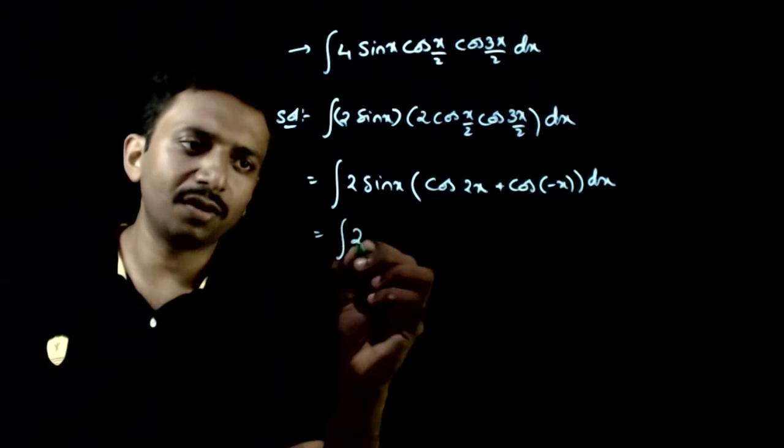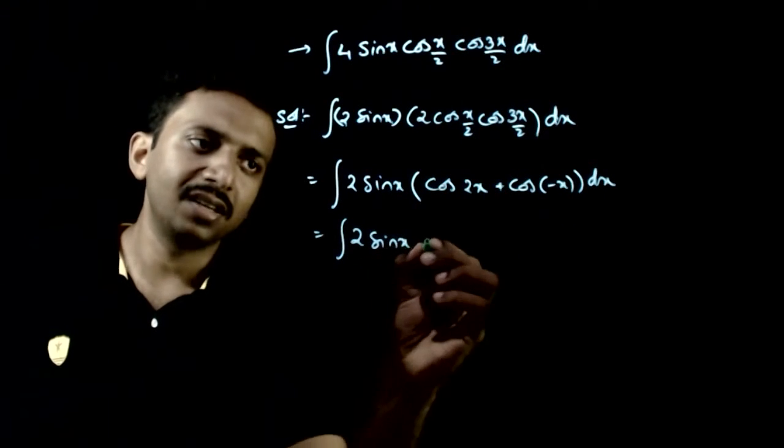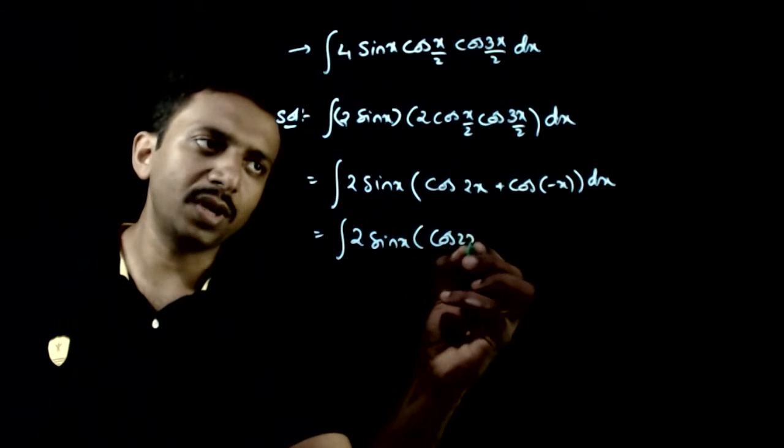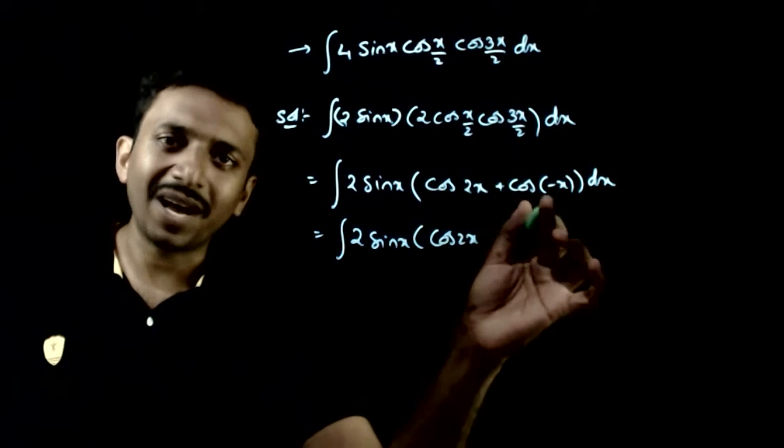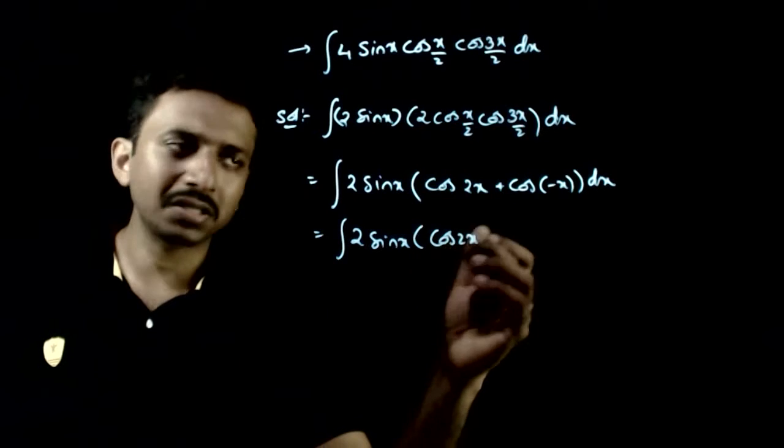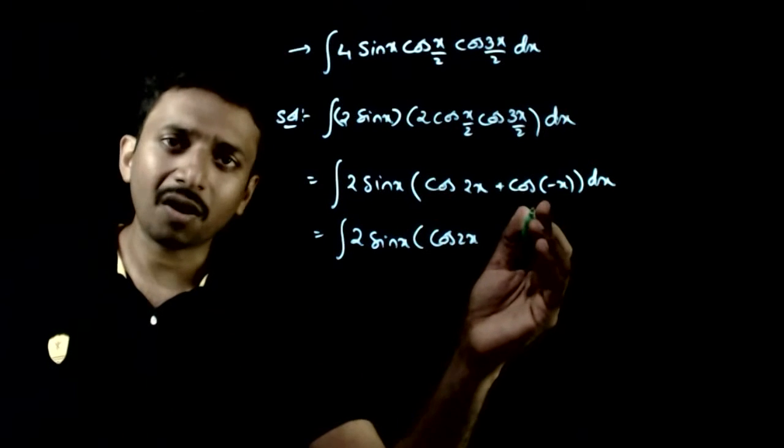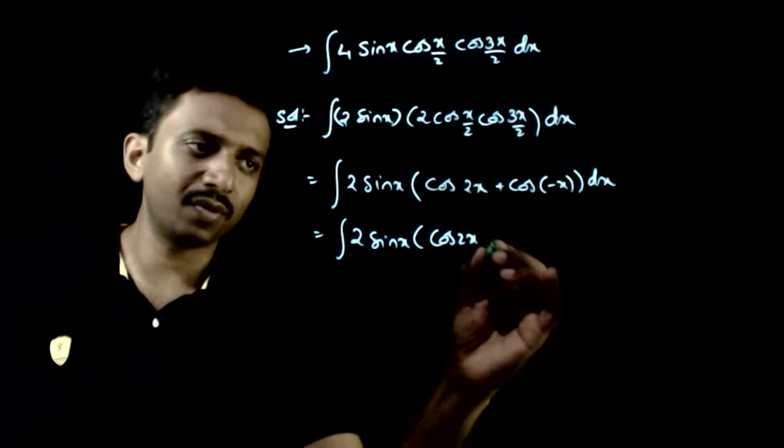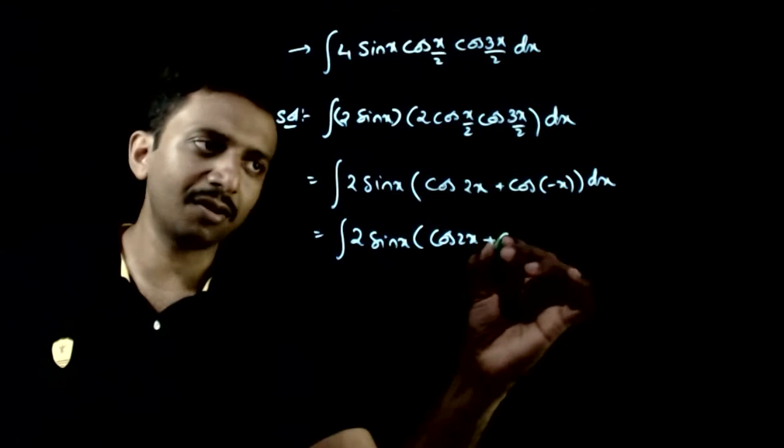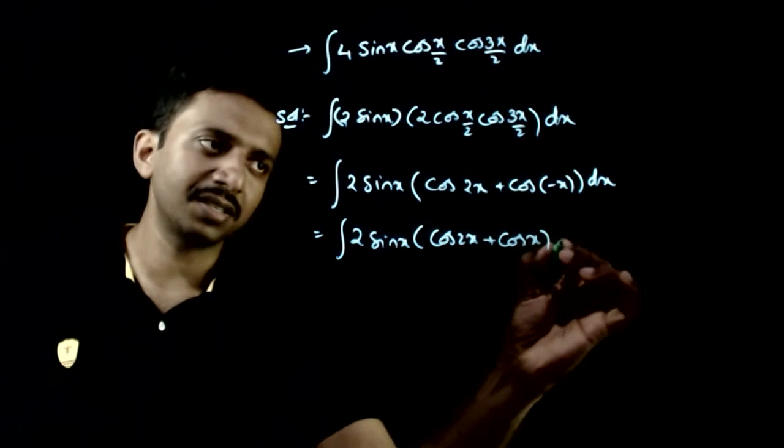That is equal to integration of 2 sin x into cos 2 x and cos minus x. Cos is positive in the first and fourth quadrant. So using trigonometry, cos minus x can be written as cos x dx.